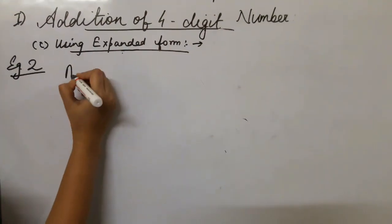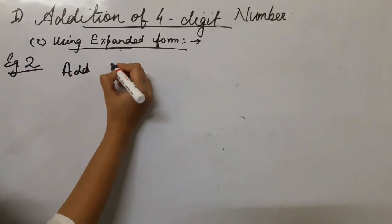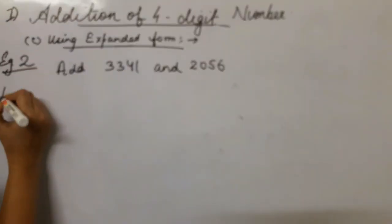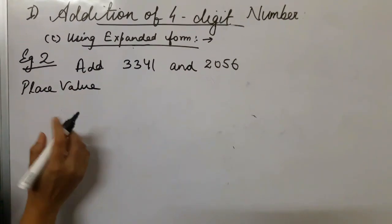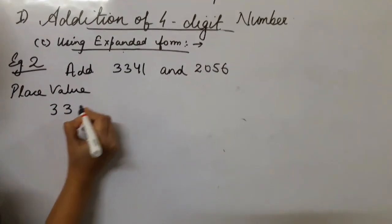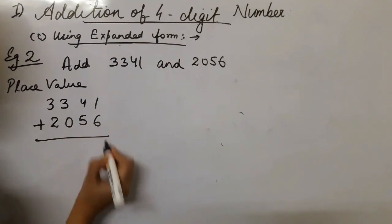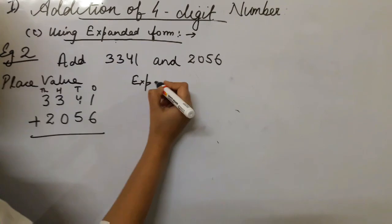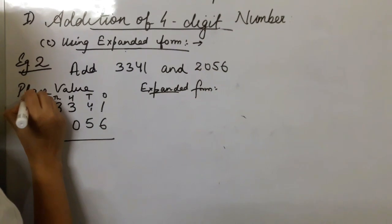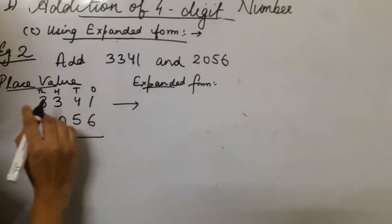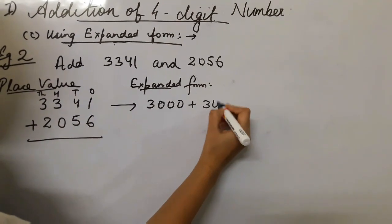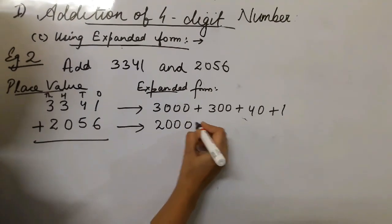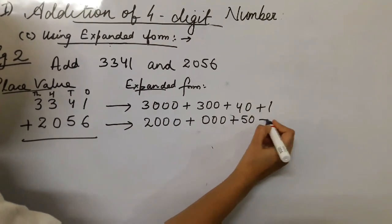Let's see one more example: add 3,341 and 2,056 using expanded form. First, write the numbers in place value columns — ones, tens, hundreds, thousands. Then expand: 3,341 is 3,000 plus 300 plus 40 plus 1. And 2,056 is 2,000 plus 0 hundreds plus 50 plus 6.